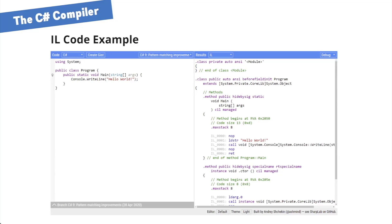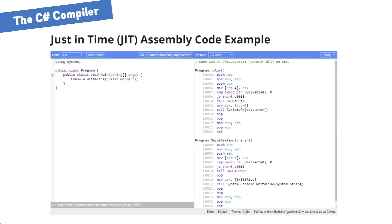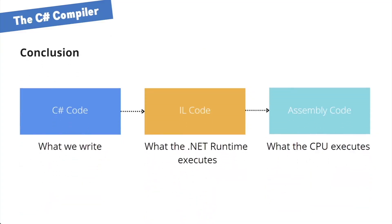This IL code can be executed on every computer that has the .NET runtime installed or packaged with a .NET application. But how does the .NET runtime execute IL code? A computer runs a specific instruction set defined by the CPU and its architecture. The .NET runtime takes the IL code generated by the C# compiler and compiles it a second time into assembly code the CPU understands. In this example we see the assembly code of the identical Hello World program. The .NET runtime uses a just-in-time, or JIT, compiler — meaning the IL code gets compiled to assembly code as needed during the runtime of the application.